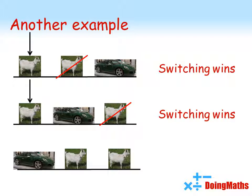In example three, you start off on the car. So, one of the other doors is opened. And in this case, switching gives you a goat. So, two of our three examples have given us a win by switching doors.